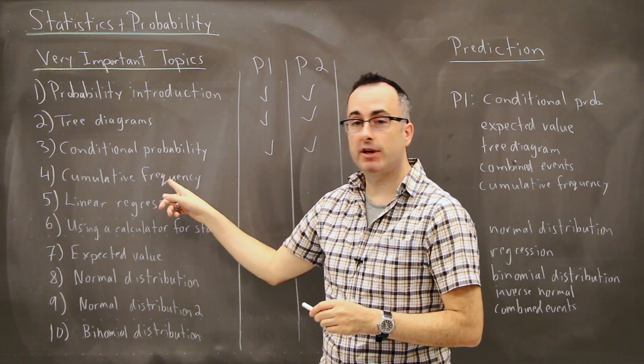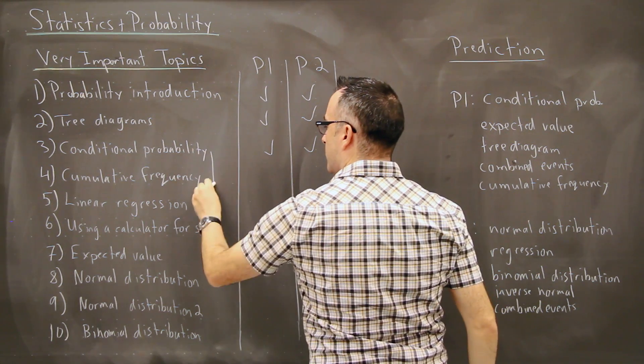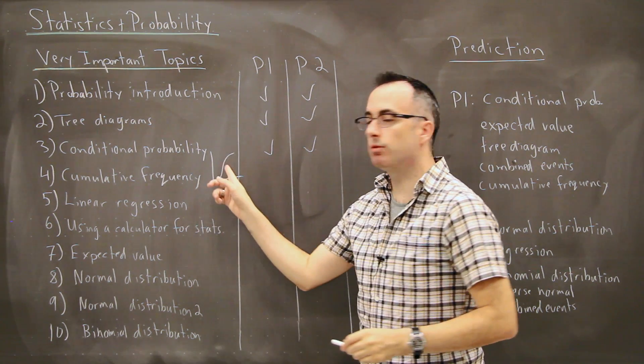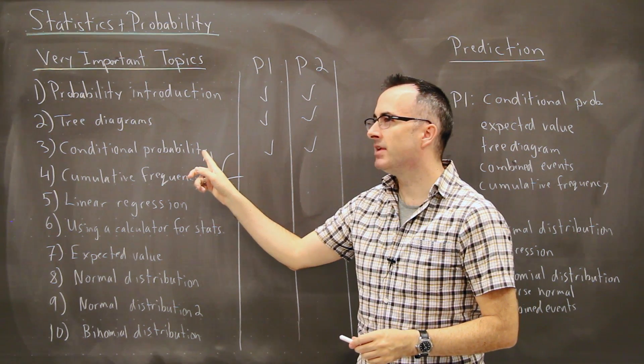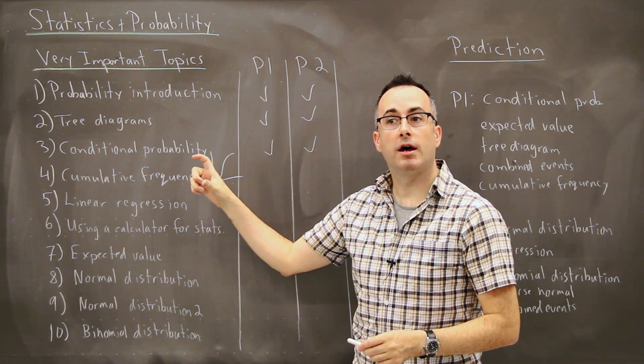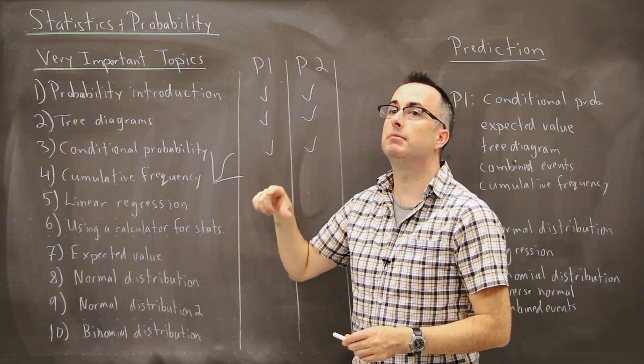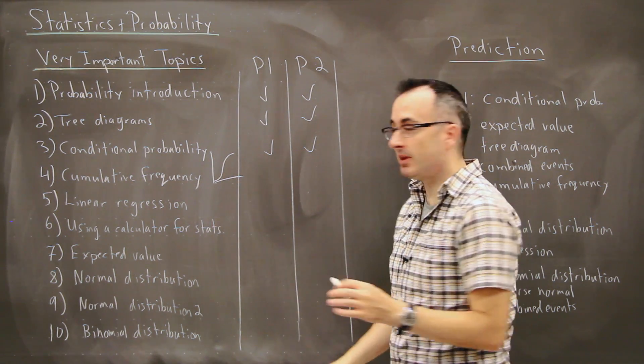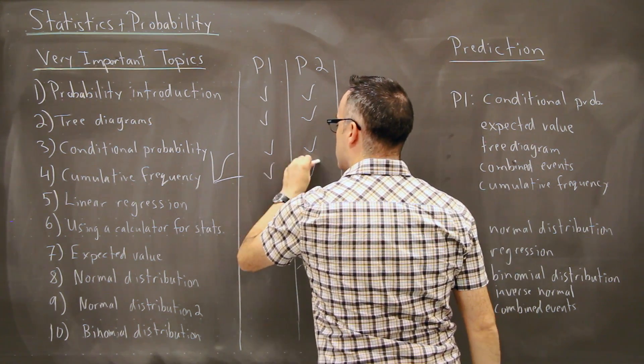Next we have cumulative frequency. These are these kind of graphs. You might have seen them. They look like this. They kind of go like that. So these are things where you can actually measure things like the median first quartile, the third quartile. You can measure percentiles, that sort of thing. And they'll show up pretty commonly on paper one and two as well.